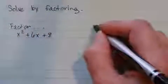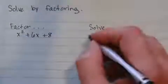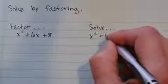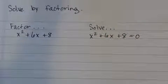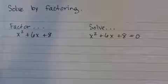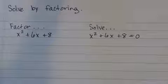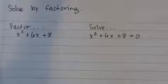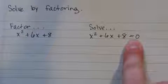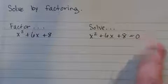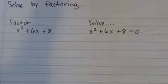And then this problem, the directions are solve. And the problem is x squared plus 6x plus 8 equals 0. And what do you notice that's similar about these problems? Yeah, I know, the quadratic trinomials are exactly the same. What's different? You are right. There is an equal 0 on the second problem. So let's look at how that changes what we need to do for our problem.